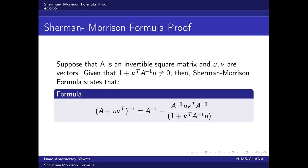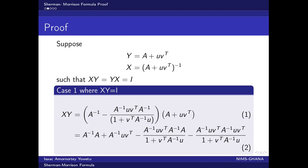And u, v are vectors. Given that one plus v-transpose A-inverse u is not equal to zero, the Sherman-Morrison formula states that A plus the uv-transpose, all inverse, is equal to the expression on the right-hand side. I want to now prove this formula.